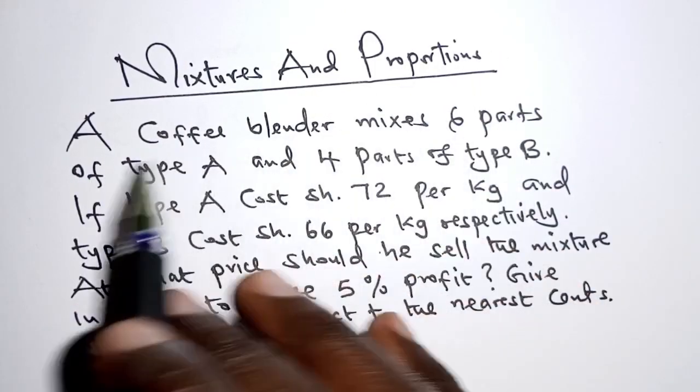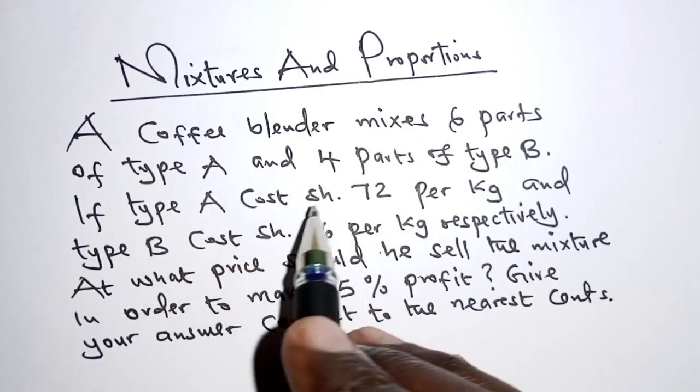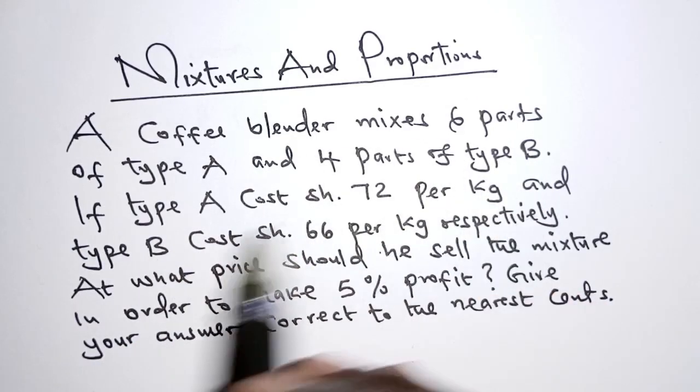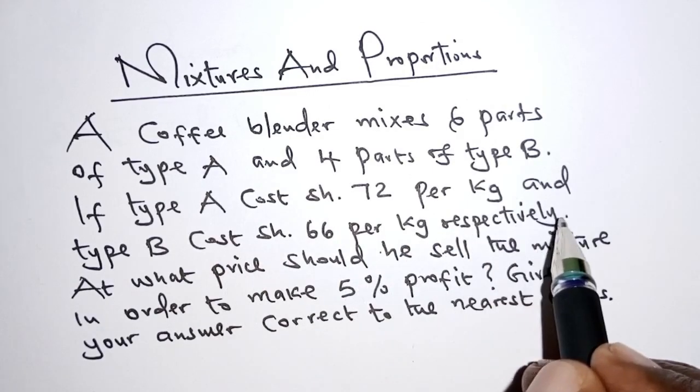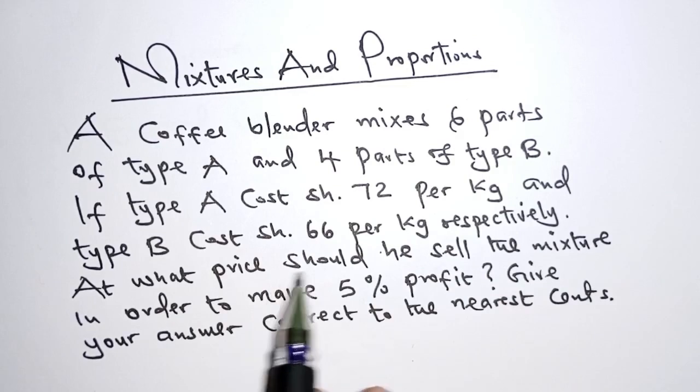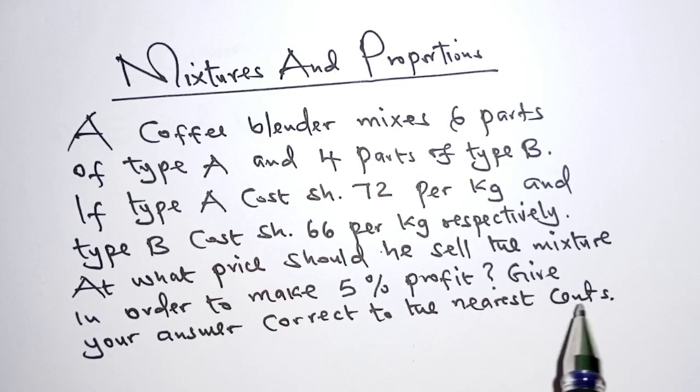A coffee blender mixes six parts of type A and four parts of type B. If type A costs 72 shillings per kilogram and type B costs 66 shillings per kilogram respectively, at what price should we sell the mixture in order to make 5% profit? Give your answer correct to the nearest cents.